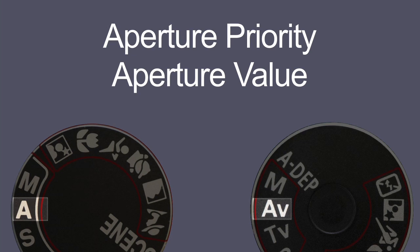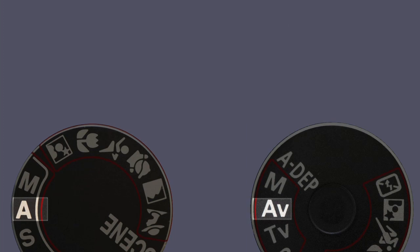Also in aperture priority mode, it's excellent for wildlife photography in low light conditions. This is because you can choose the widest aperture, which if you remember is the lowest f number, and then you can point your camera at the wildlife and you will automatically get the fastest shutter speed in those conditions by having the widest aperture chosen. So that's the mode I use a lot for wildlife photography, especially in low light.